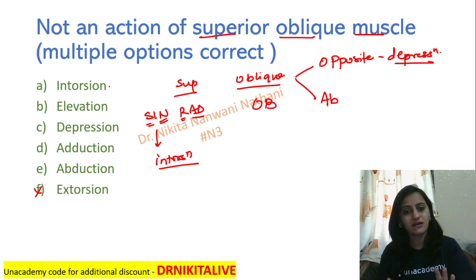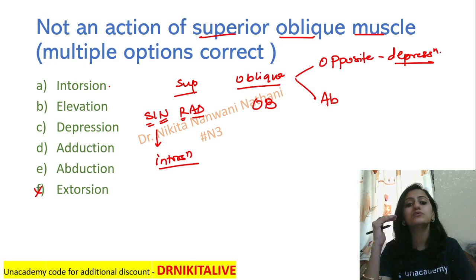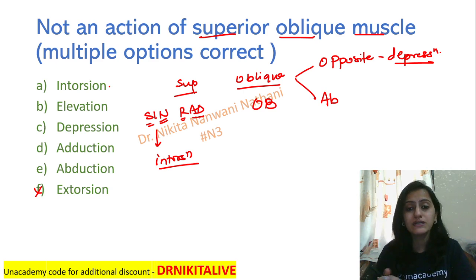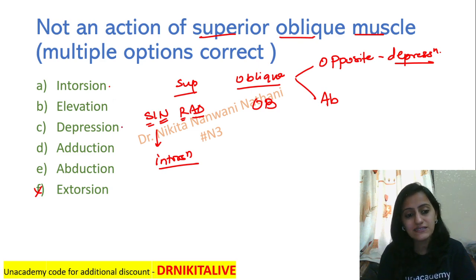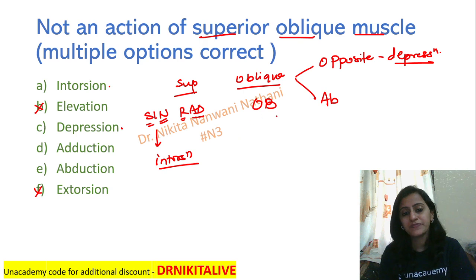Jaisa nam vesa ka — as the name so the action. So superior rectus will do elevation. But superior oblique, being an oblique, will do the opposite action — it will do depression. So yes, it does depression and it does not do elevation.